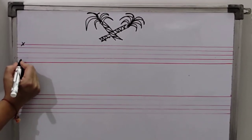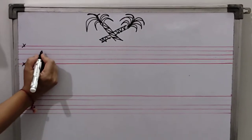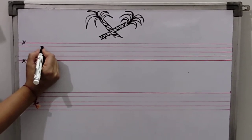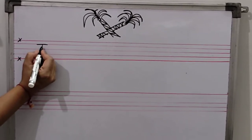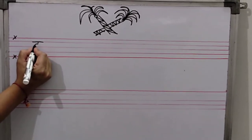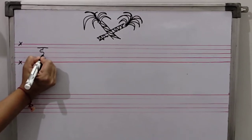First line ko touch nahi karna. Last one in line ko touch nahi karna. What should you put first? Sleeping line, small one standing line. Then you will make eek.